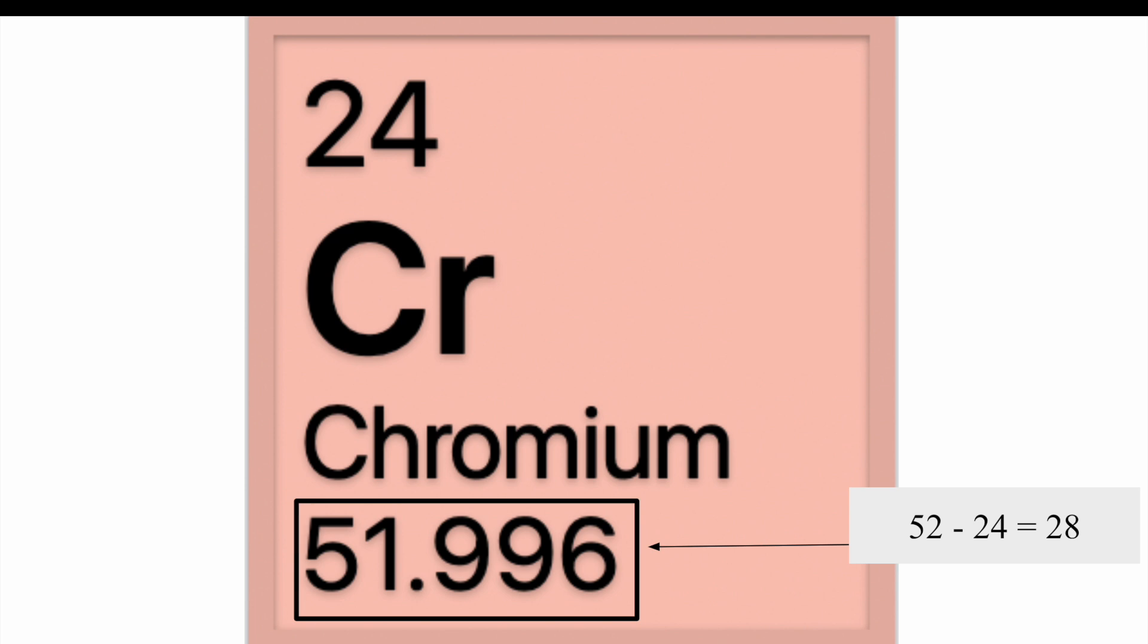Chromium's amu on average rounds up to 52 amu. 52 minus 24 because 24 is chromium's atomic number, aka the amount of protons chromium has. 52 minus 24 is 28. So on average chromium has 28 neutrons.